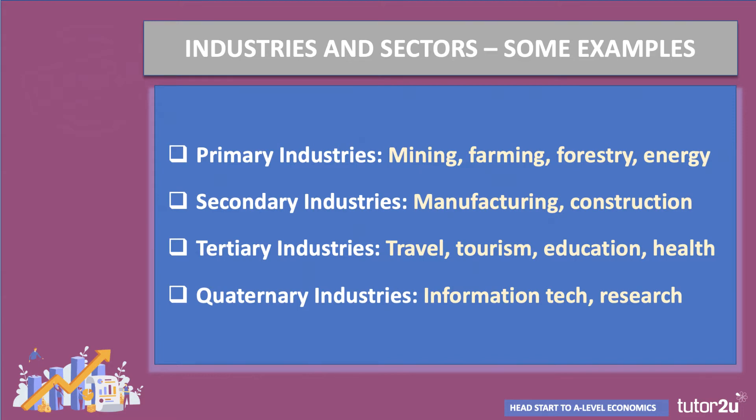We can break that GDP figure into the output — the value of output that derives from each of those different sectors.